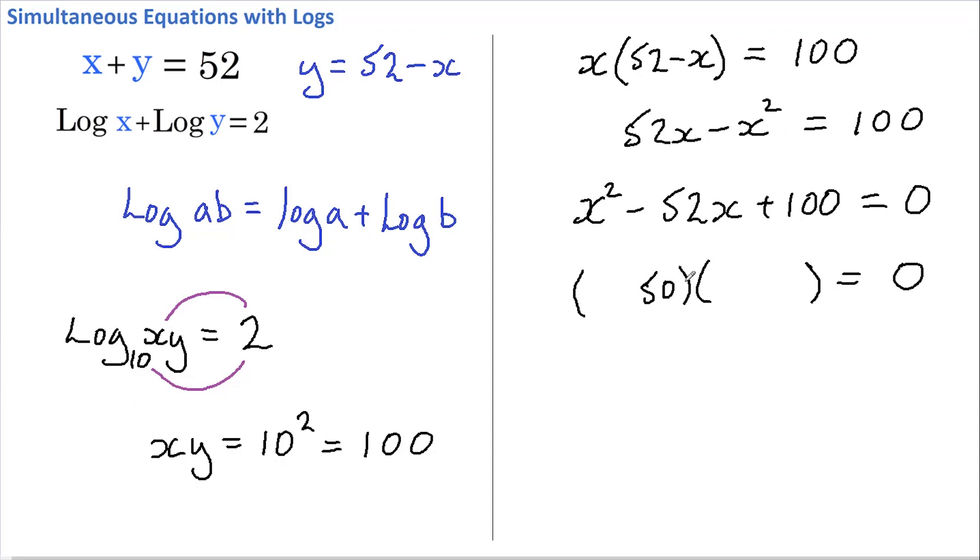We just need two numbers that multiply to 100 and add or subtract to 52, and I think that's going to be 50 and 2.